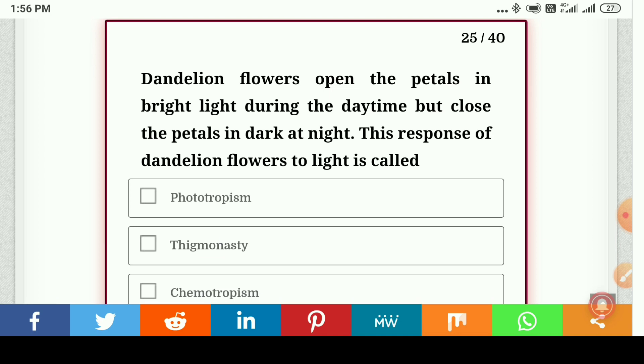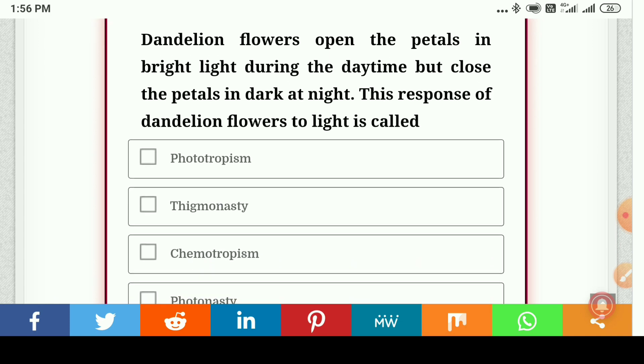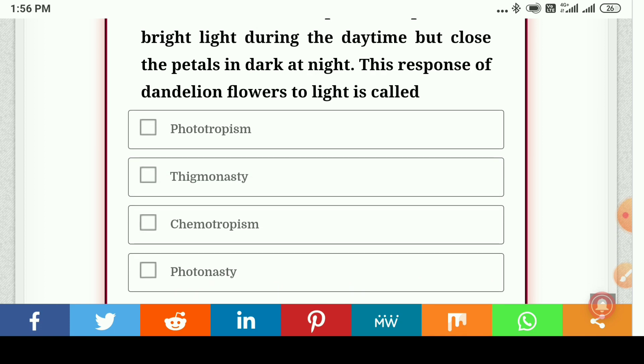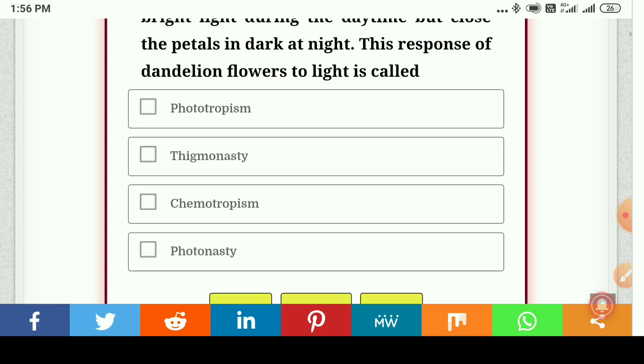Dandelion flowers open the petals in bright light during the daytime but close the petals in dark night. This response of dandelion flowers to light is called phototropism, thigmotropism, chemotropism, or photonasty. The answer is photonasty.